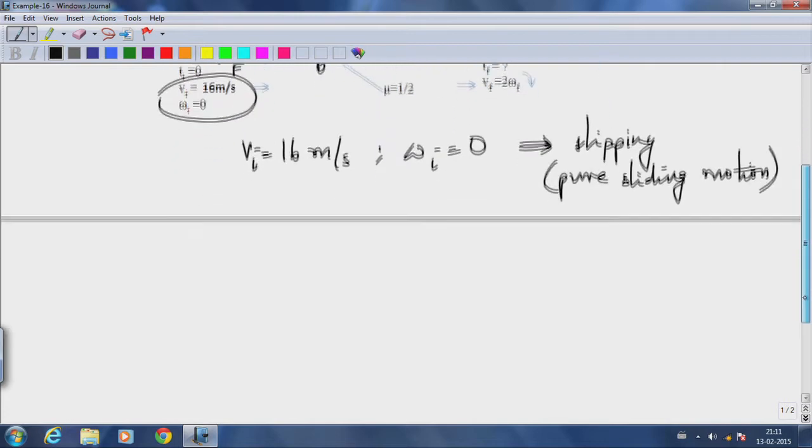Let us draw a free body diagram of this circular cylinder. There is the weight that is countered by the normal reaction from the table. The only other force acting is a friction force F, and because we know that velocity is to the right...